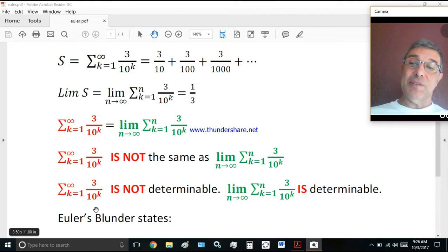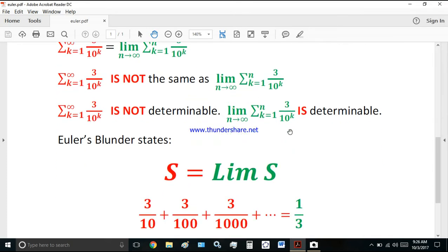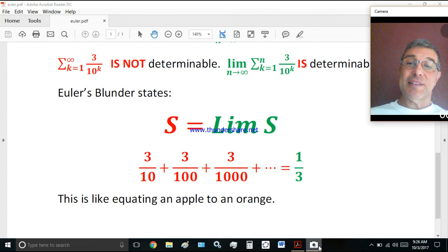The series is not determinable, but the limit is determinable. So Euler's blunder states: S is equal to lim S. Therefore, what you see here is really what Euler defined as S equals lim S, the series equal to its limit. This is like equating an apple to an orange. It's completely ridiculous, isn't it?